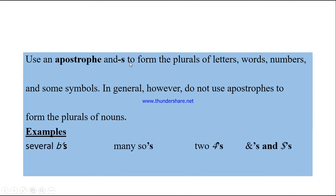Use apostrophe S to form the plurals of letters, words, numbers, and some symbols. However, do not use apostrophes to form the plurals of nouns. For example: 'I wrote several B's today.' 'He said many SOS's.' 'Two 4's' — if I put S directly it would be a great mistake, so I add apostrophe S.